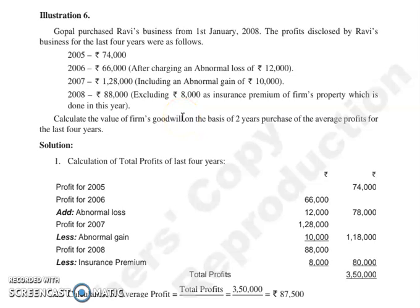Good morning everyone. Continuing with our next question, Illustration number 6. Gopal purchased Ravi's business from 1st January 2008. The profits disclosed by Ravi's business for the last 4 years were as follows: 2005 profit was 74,000.